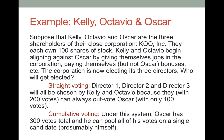The corporation is now electing three new directors — let's say they're electing all three directors. Who's going to get elected? If it's straight voting, director one, director two, and director three are all going to be chosen by Kelly and Octavio because they together have 200 votes. Each share of stock has one vote, so the vote for each of these three positions is going to be 200 against 100. Kelly and Octavio will therefore select all three directors — say Kelly, Octavio, and Octavio's wife. Is that fair to Oscar? Certainly Oscar doesn't think so.